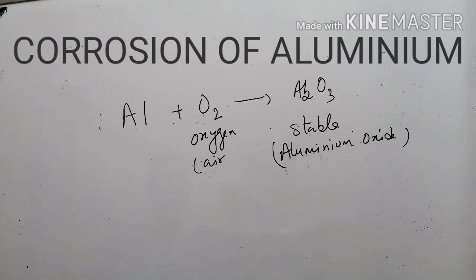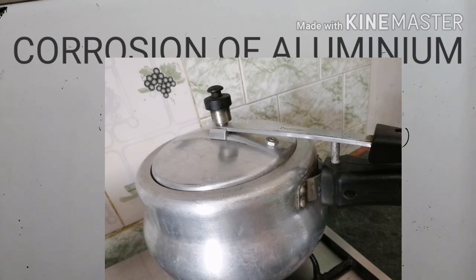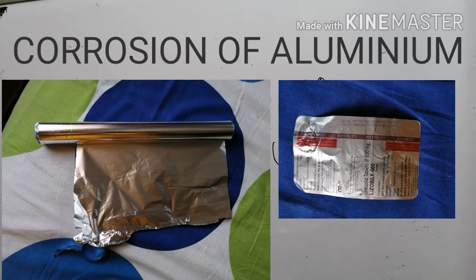Children, you can see so many objects made up of aluminum around you in your daily life. For example, aluminum rod, aluminum wire, aluminum pan, cooker, etc. Other than this, you can see the aluminum foil, which we are using for wrapping the food materials or wrapping the medicines. So, because of this oxide layer, only we can use the aluminum metal for all this purpose.